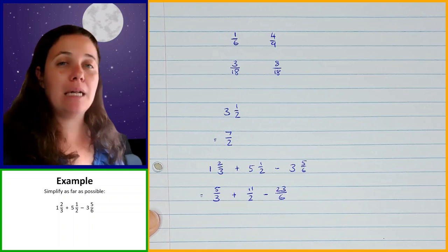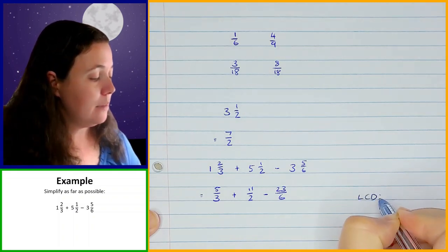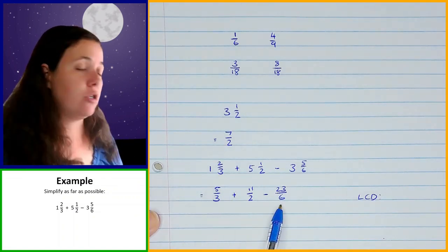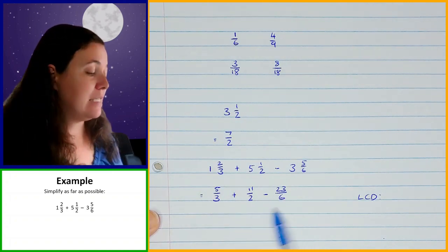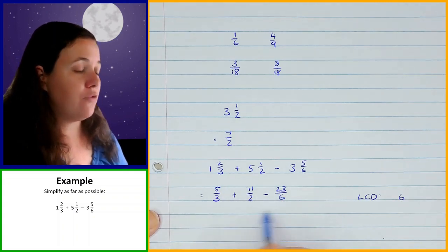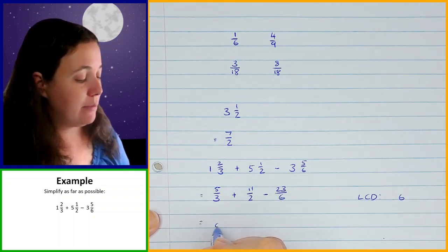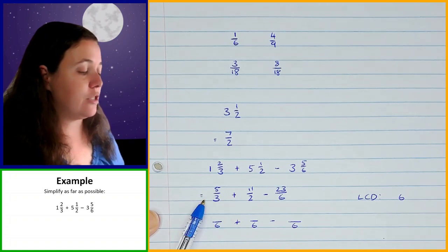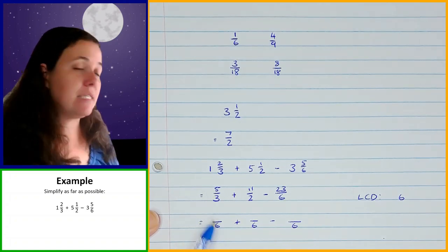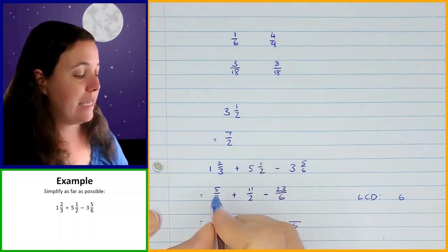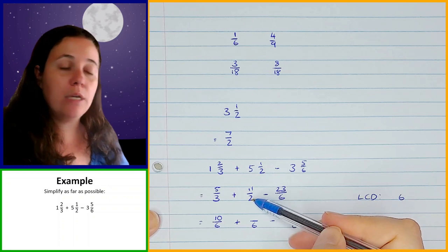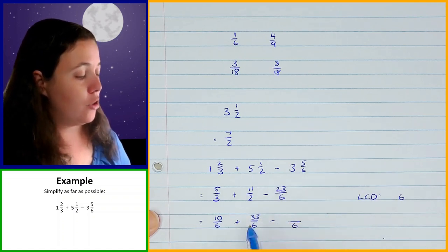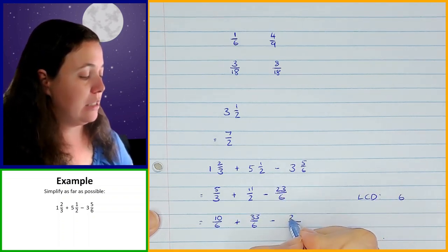The next thing I'm going to do is find my LCD. My LCD is the smallest number that all three of these denominators can go into evenly. And in this case, that LCD is going to be 6. So I'm going to change all of these fractions to something over 6. For the first one, how do I change the 3 to 6? I need to multiply it by 2, so I'm going to multiply the numerator by 2 as well — that gives me 10 over 6. For the second one, I need to multiply by 3, so I'm going to multiply the 11 by 3 as well, giving me 33 over 6. And then this one is already over 6, so I don't need to do anything to it.